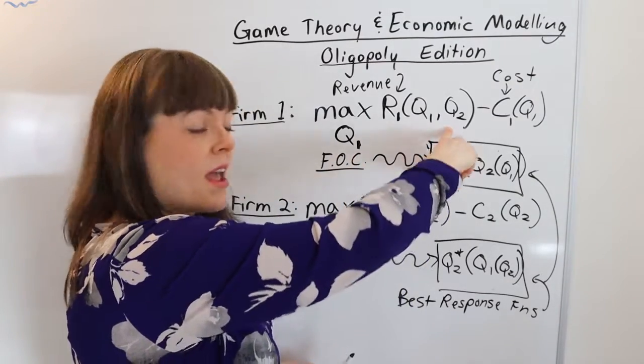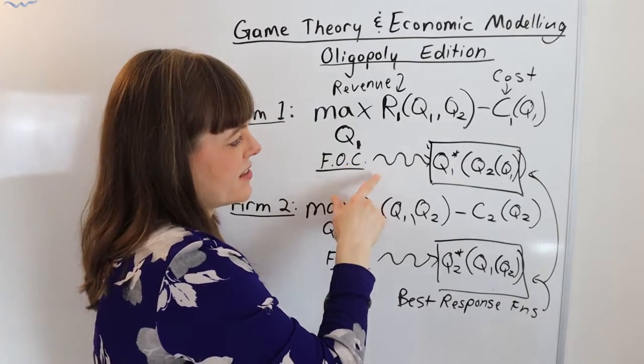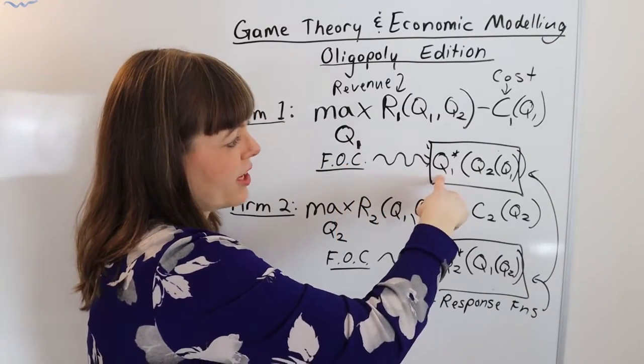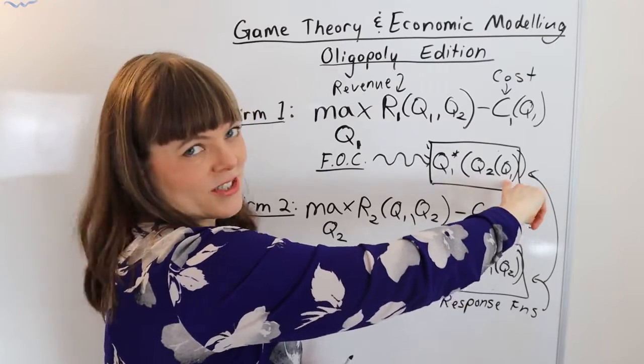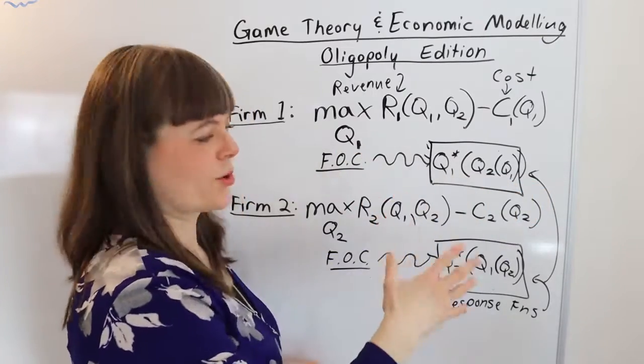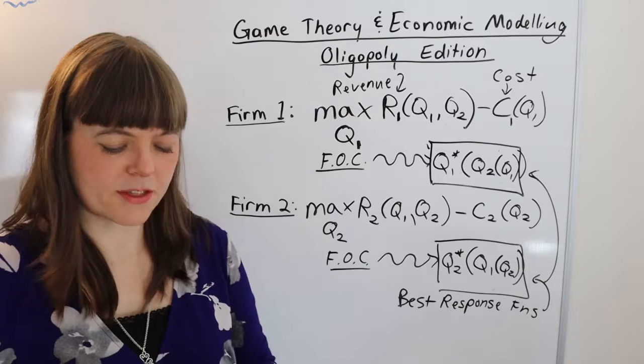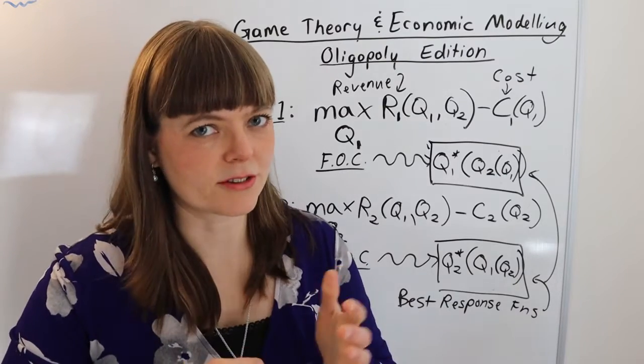And as a result of that the optimal choice for each player depends on the other player's optimal choice which in turn depends on one's own optimal choice and that's how game theory shows up when you're building economic models.